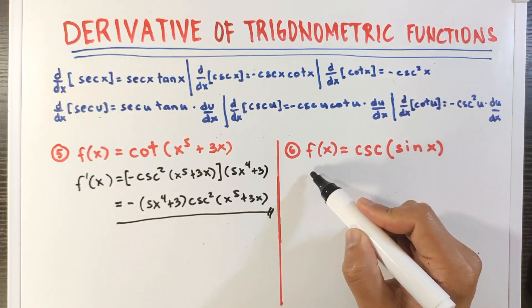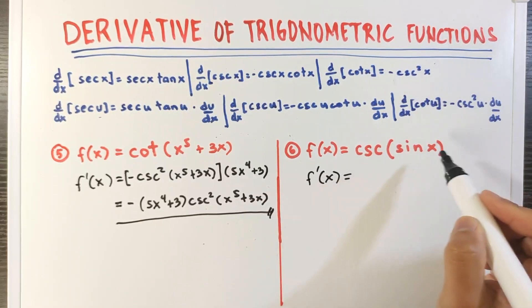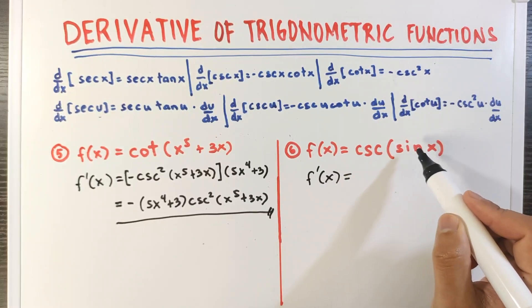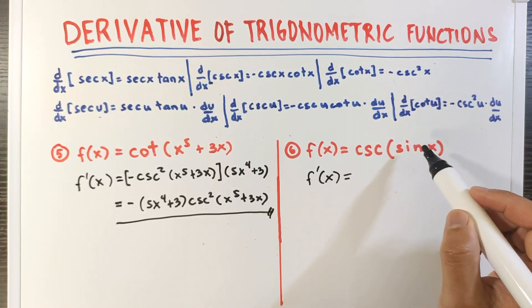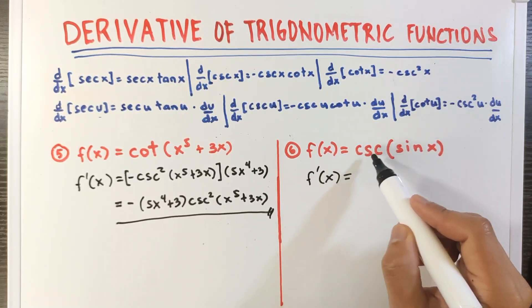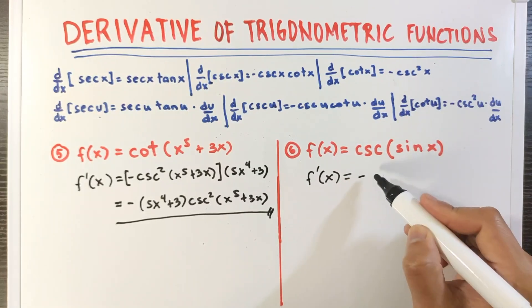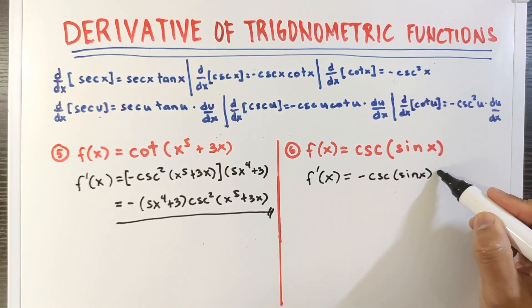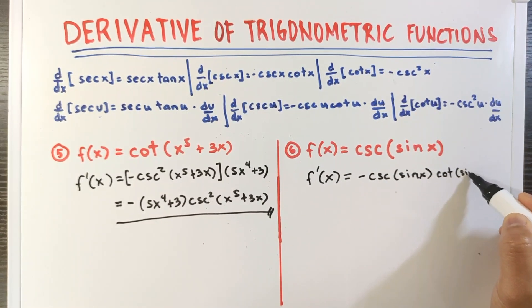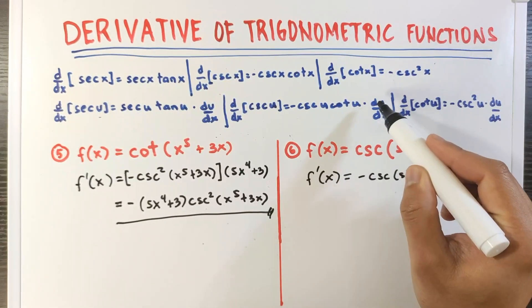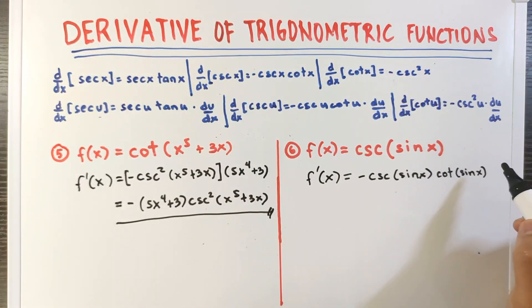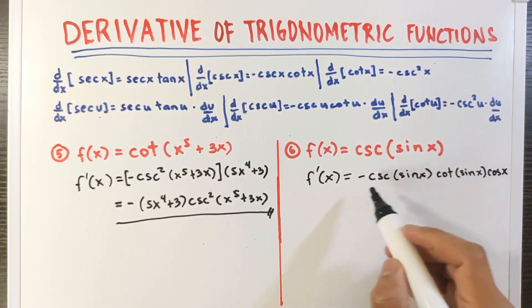Number 6: f(x) = cosecant(sin x). The argument of cosecant is sin x, which is the inner function. Using the chain rule formula, f′(x) equals negative cosecant(sin x) cotangent(sin x) times the derivative of sin x, which is cos x. So the final answer is negative cosecant(sin x) cotangent(sin x) cos x.